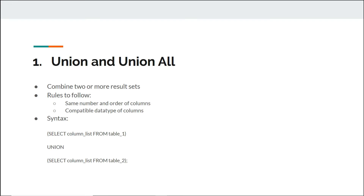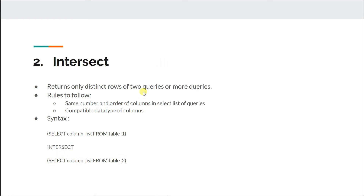Here are the rules to follow for set operators. First, you need to have the same number of columns, because if one result set has two columns and another has five, you can't combine them. You also need compatible data types — if there is a string value in the first result set, there needs to be a string in the second. The syntax is: SELECT column_list FROM table1 UNION SELECT column_list FROM table2.